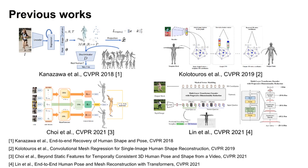Human Mesh Recovery, HMR, is a problem that uses RGB inputs to infer the human body model, such as SMPL, parameters that represent a person's three-dimensional pose and shape. Along with 3D joint-based approaches, HMR is a fundamental task of computer vision and is highly sought in downstream applications such as computer graphics, robotics, and AR/VR.